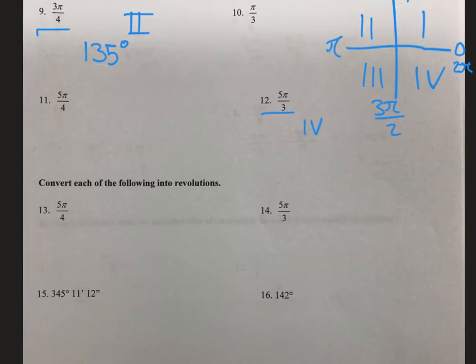Now we are going to convert to revolutions. Remember that 1 revolution is equal to 2π. So here we have, for number 13, 5π divided by 4. Just like converting to degrees, we start off by writing what we are converting from on the bottom.